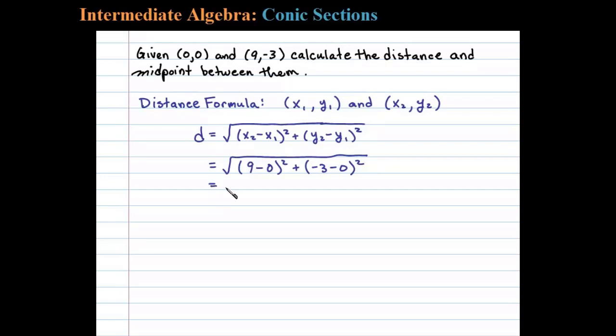Now simplifying this, we have √(9² + (-3)²). Simplifying further, 9² is 81, and (-3)² is 9, so 81 + 9 equals the square root of 90.